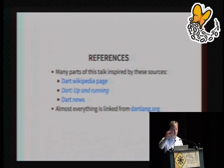For more information: the Dart Wikipedia page is a great summary. Dart Up and Running is an online book — the entire contents are available online, though it's copyrighted by O'Reilly. There's a news/blog at dartlang.org that covers something new in the Dart world every four or five days. And the only URL to really remember is dartlang.org. That is my last slide, and I still have about five minutes for questions.